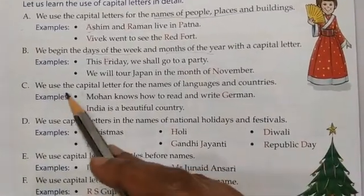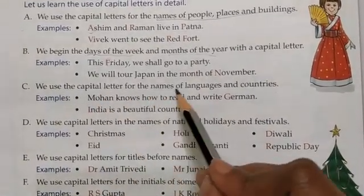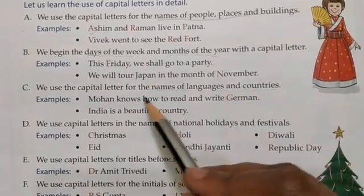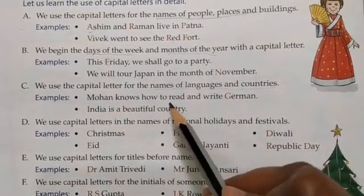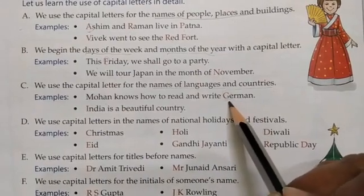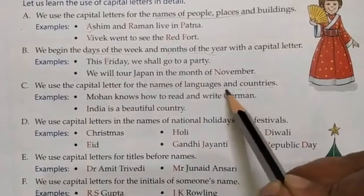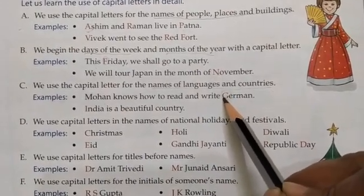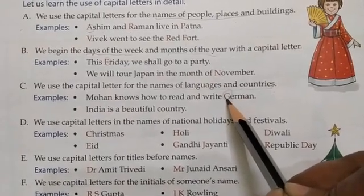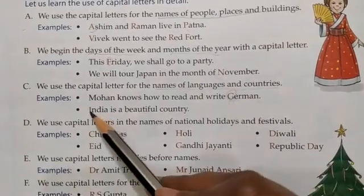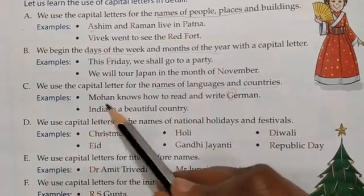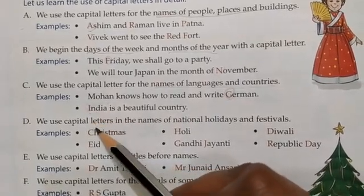Similarly, we use capital letters for the names of languages and countries. For example, 'Mohan knows how to read and write German' — German is the name of a language, so G is capital. 'India is a beautiful country' — India is the name of a country, so I is capital.